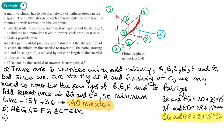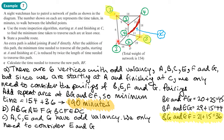Since we're starting at A and finishing at C, these ones can remain odd. So the only pairing we now need to consider is E and G. The next step is to find the shortest route between E and G - and we've done that already. The shortest route from E to G equals 15.